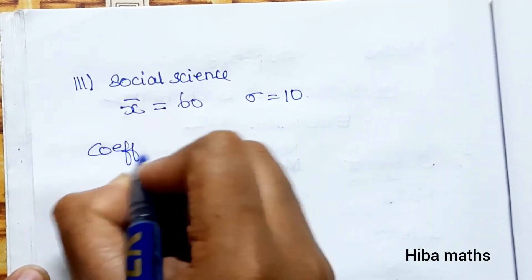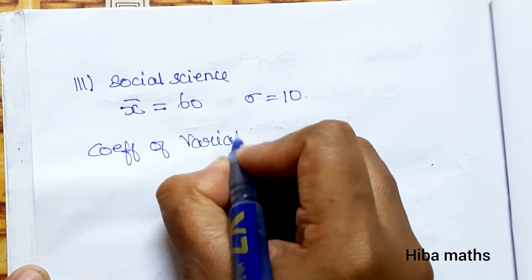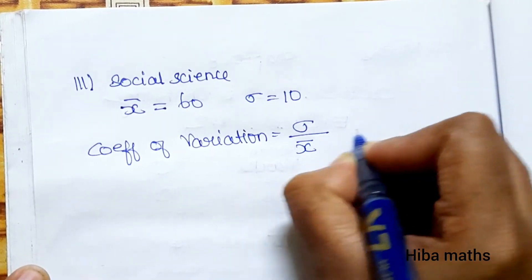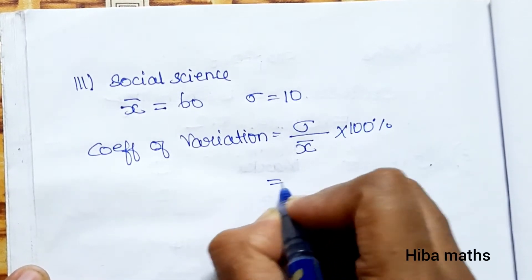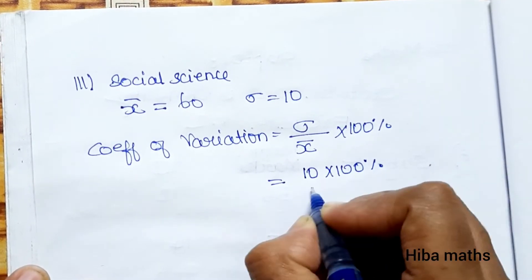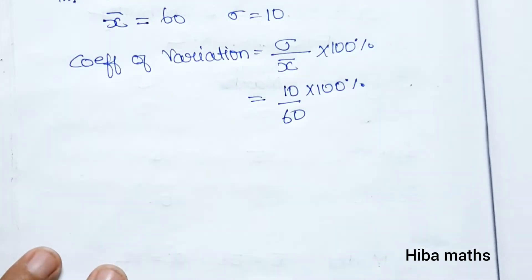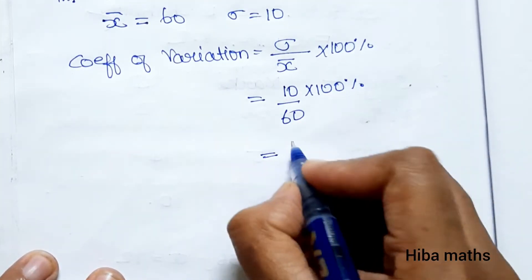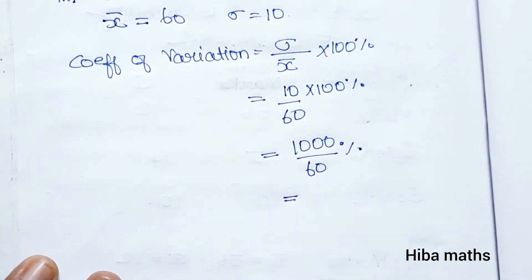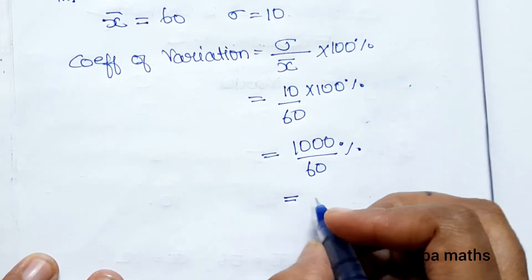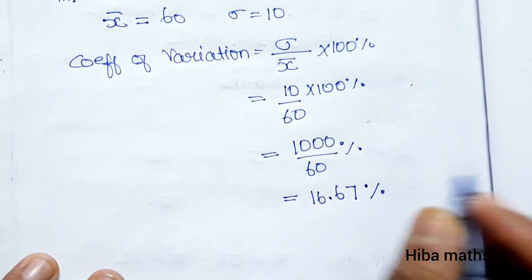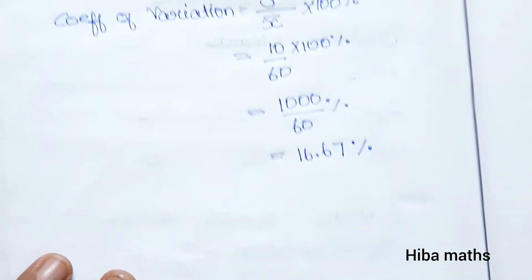For Social Science: Coefficient of Variation equals standard deviation by mean into 100 percent, which is 10 divided by 60 into 100%, giving 1000 divided by 60 percent. Solving this gives 16.67 percent. So the Coefficient of Variation for Social Science is 16.67 percent.